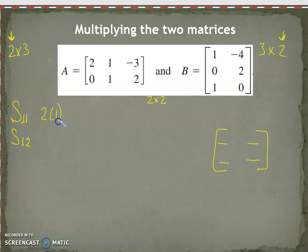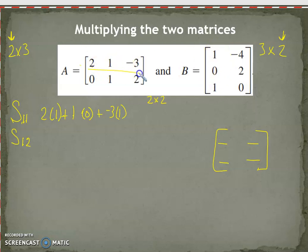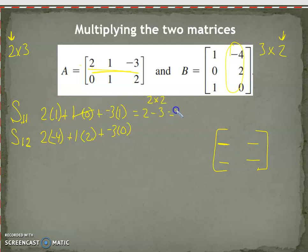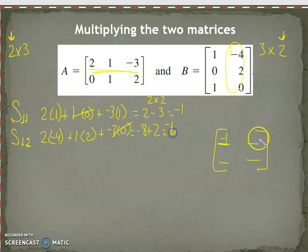For first row, first column: two times one, plus one times zero, plus negative three times one. Then first row, second column: two times negative four, plus one times two, plus negative three times zero. So for first row, first column we get two plus zero minus three, which is negative one. For first row, second column we get negative eight plus two plus zero, which is negative six.